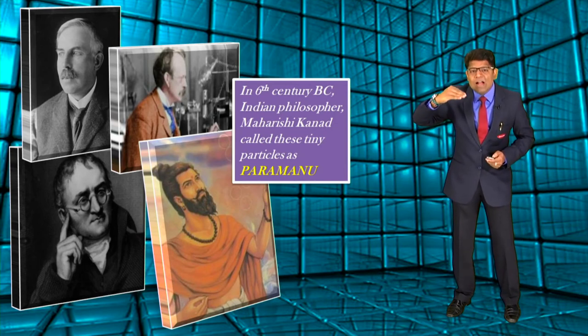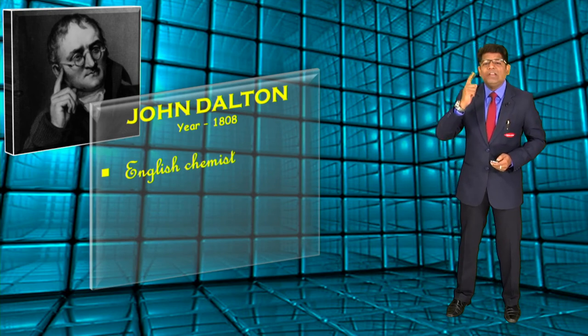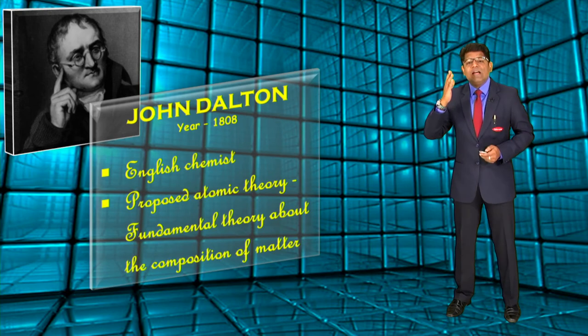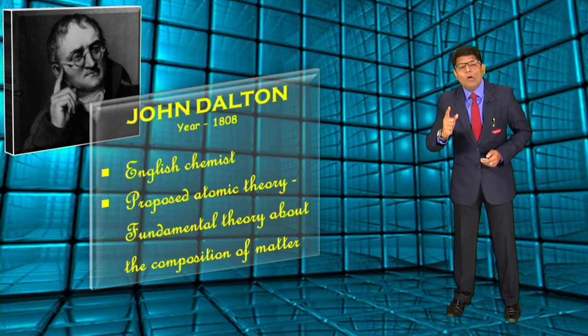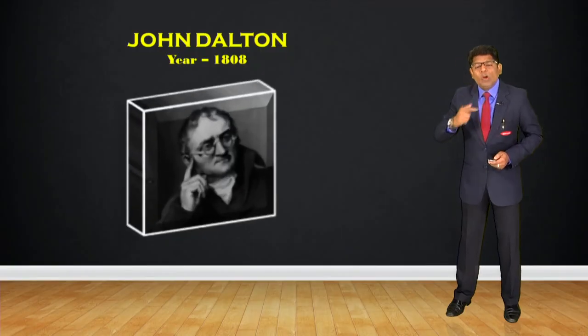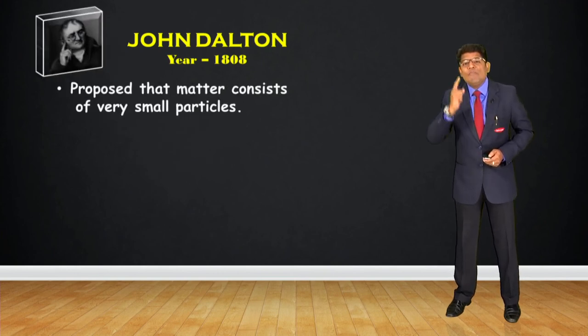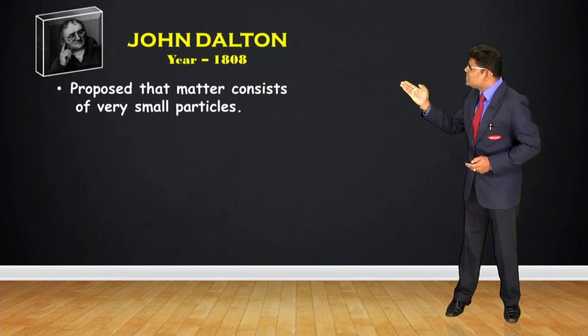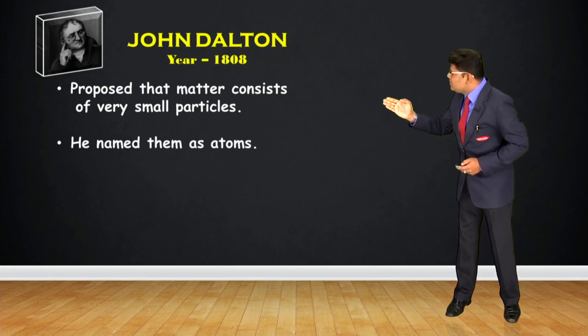The study of atoms progressed further when John Dalton, an English chemist, in the year 1808 put forward a theory called Dalton's Atomic Theory. This theory was fundamental about the composition of matter. He proposed that matter consists of very, very small particles, and he named these small particles as atoms.